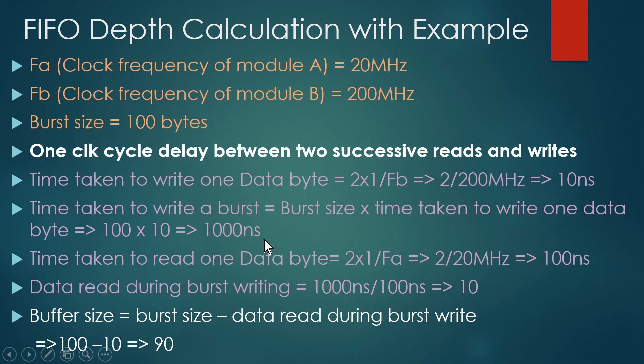In the third step, we calculate the time taken to read one data byte. Module A takes two clock cycles to read data because one cycle is idle. The time period of module A's clock is 1/FA, so the total time for two clock cycles is 2 × (1/FA) = 2/20 MHz = 100 nanoseconds. So we can read one data byte in 100 nanoseconds.